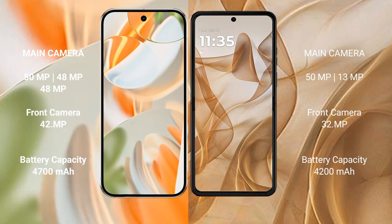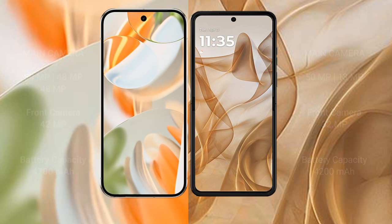The Google Pixel 9 Pro has a 4700mAh battery with 27W fast charging support. The Motorola Razr 50 has a 4200mAh battery with 30W fast charging support.